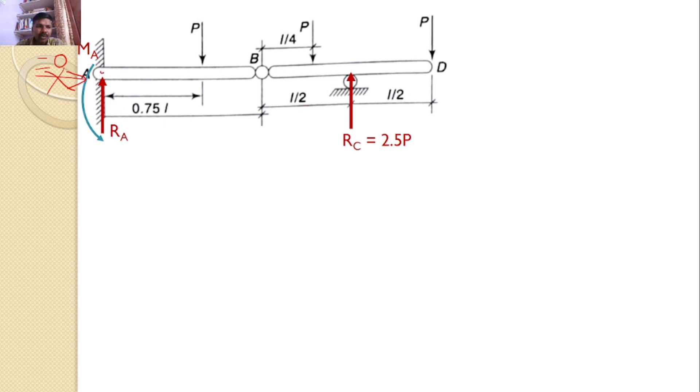Now, I will take the moments about point A. If I take the moments about point A, I can find Ma here in this direction. P will introduce a moment in the clockwise. This P will introduce a moment clockwise. This P will also introduce a moment clockwise, but this Rc will introduce a moment counterclockwise.